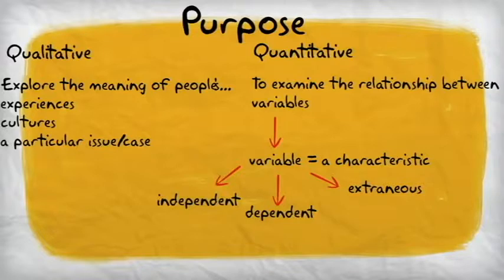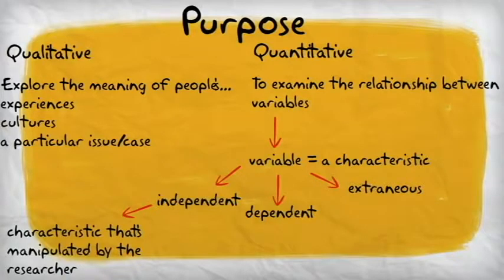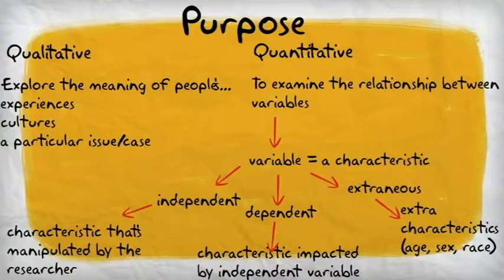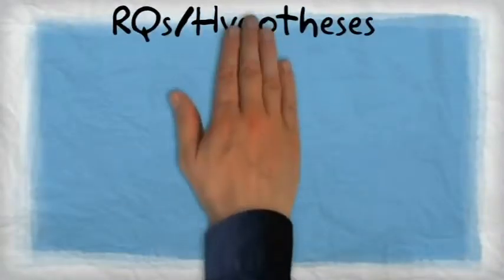Now let's define a variable. A variable is a characteristic that has two or more mutually exclusive values or properties. For this class, we are going to learn three kinds of variables: the independent, dependent, and extraneous.